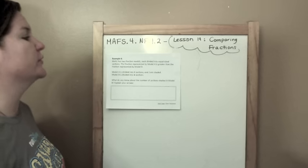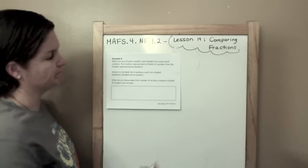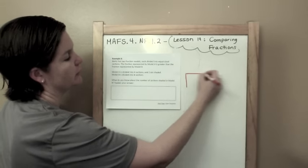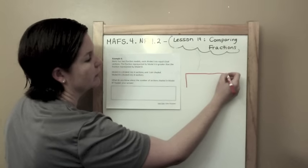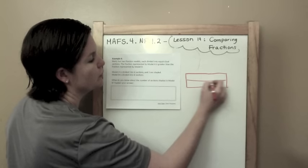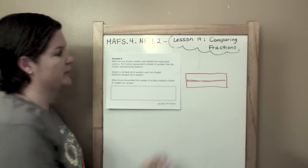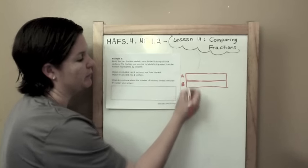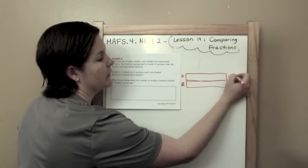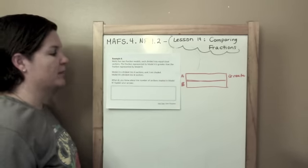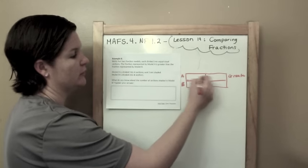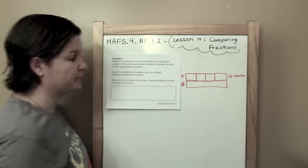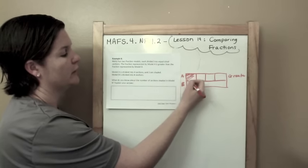Molly has two fraction models, each divided into equal sections. So there's two models. I'm going to use my rectangle method again. She's saying that there's two models. The fraction represented by model A is greater than the fraction represented by model B. So whatever I draw in here needs to be the greater one. Model A is divided into four sections: 2, 3, 4. And two are shaded. 1, 2.